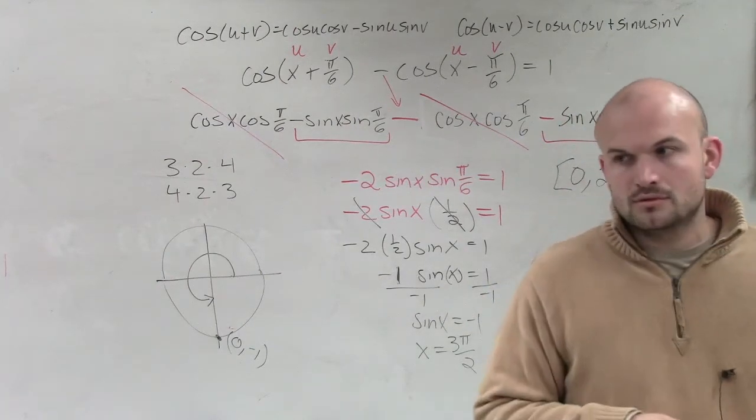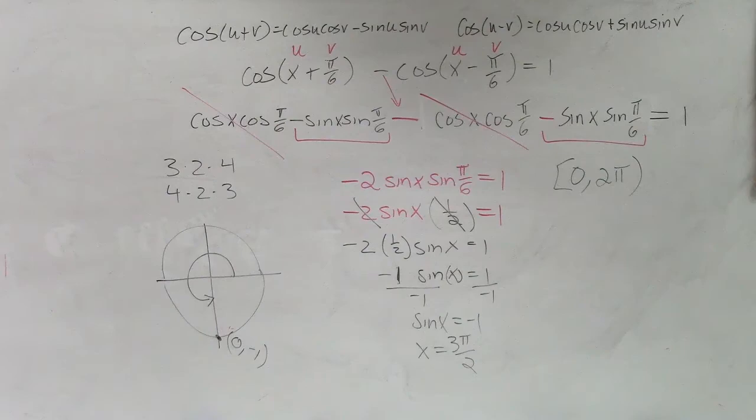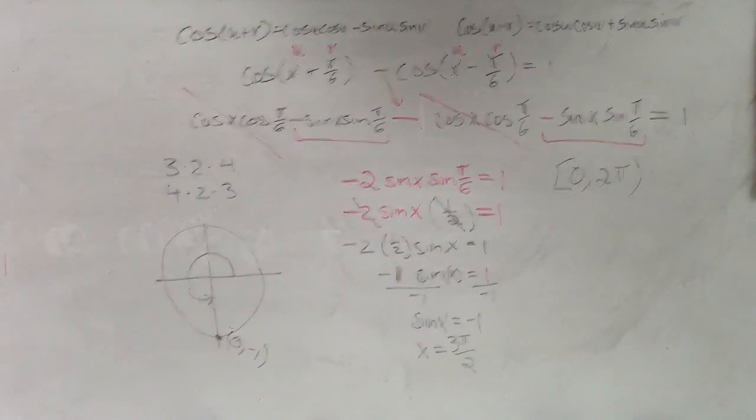That's the only time that our angle is going to produce a y-coordinate on the unit circle where it equals negative 1, between 0 and 2π. OK? Make sense a little bit? So we're going to say, give all the solutions between 0 and 2π? No, only when it's equal.